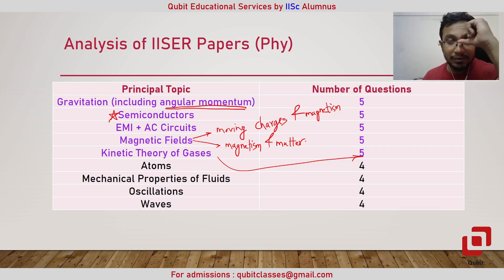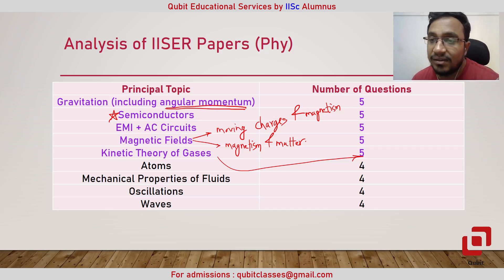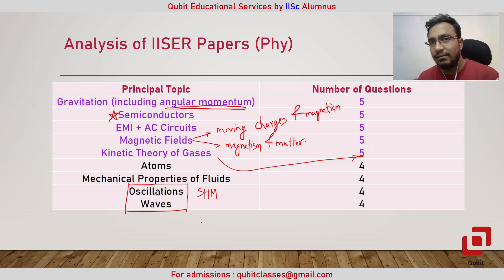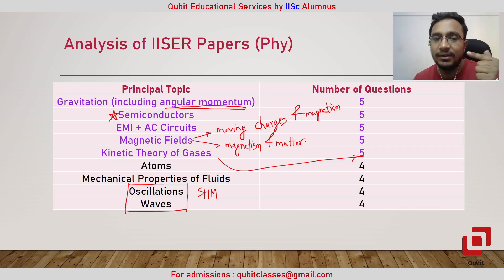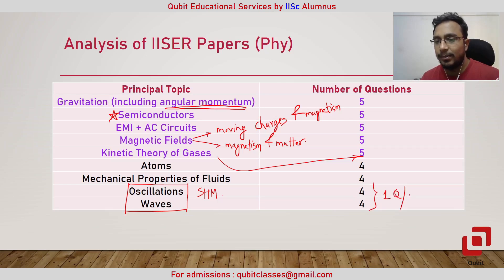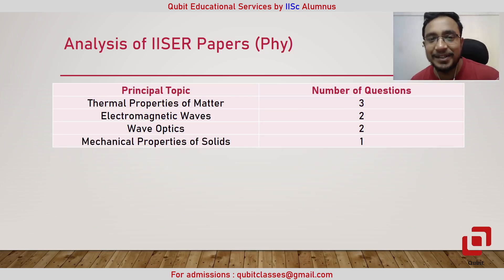Then we have atoms with four questions, mechanical properties of fluids, and oscillations and waves. Trigonometry is required, and sometimes interference of waves is also asked. Even if they don't ask Young's double slit experiment directly, you may have two waves traveling and the question asks when they meet and what the amplitude will be. This may account for one question per paper.